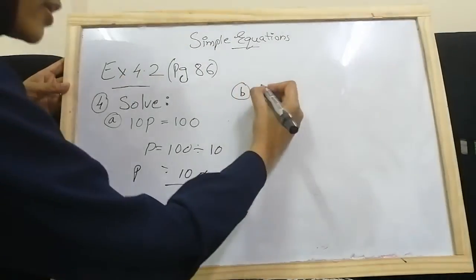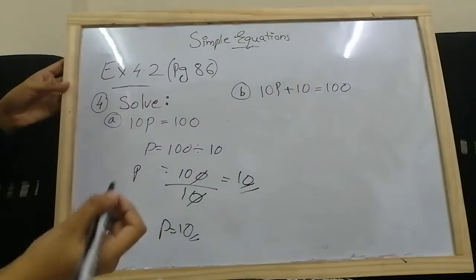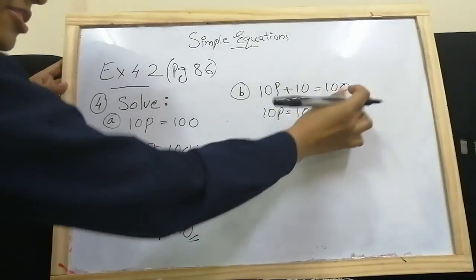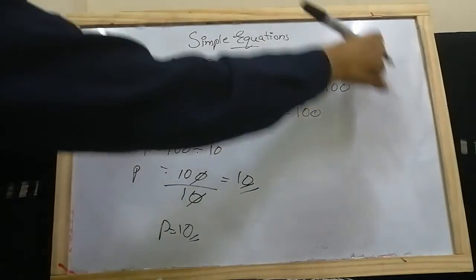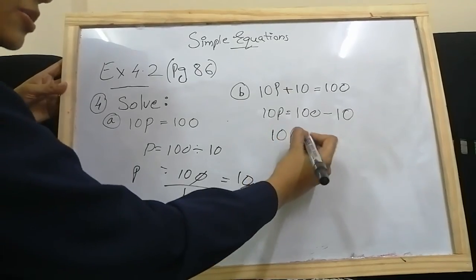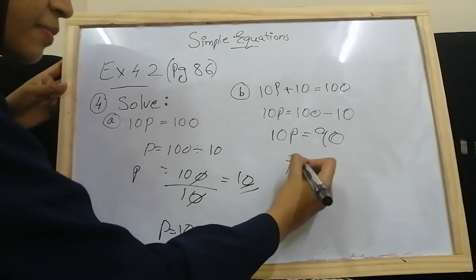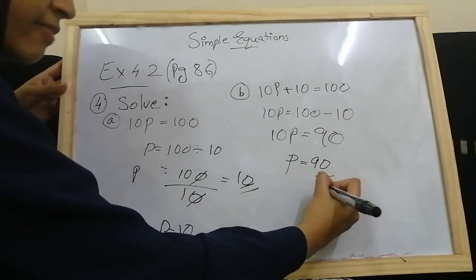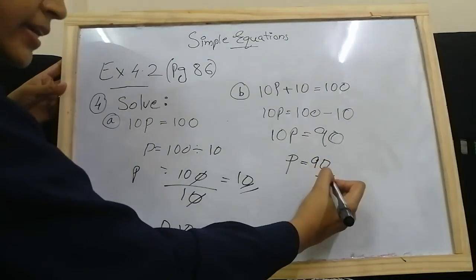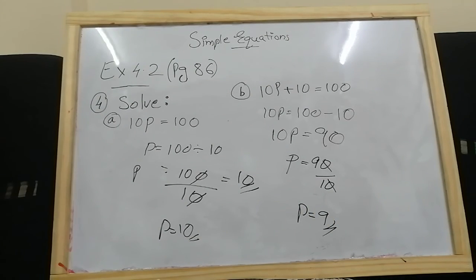Sub-question b: 10p plus 10 equals 100. First, take numbers together: 10p equals 100 minus 10 equals 90. Then p equals 90 divided by 10 — since 10p means 10 into p, multiplication becomes division. 90 divided by 10 — zeros cancel — p equals 9.